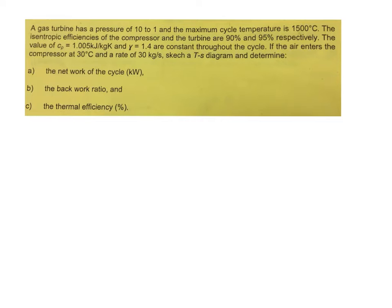We are going to try to solve this problem here, where you have a gas turbine with a pressure ratio of 10 to 1, and the maximum cycle temperature is 1500 degrees C. This is actually happening at the exit of your combustion and inlet to your turbine. Given that the isentropic efficiency of your compressor and your turbine are 90% and 95% respectively, which means that your compressor and your turbine is not working on ideal condition due to some irreversibility, so it's going to have some losses.